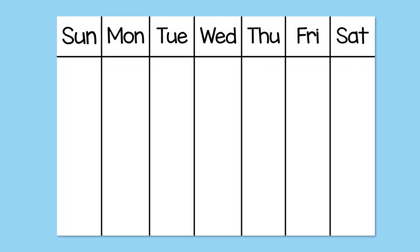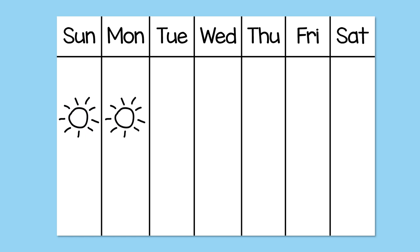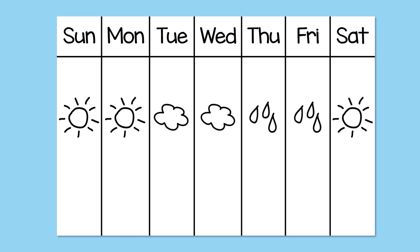You can draw a chart with a space for every day of the week, or use a calendar. Each day, the child can draw a symbol for the weather. At the end of the week, you can look at the chart together and talk about it.